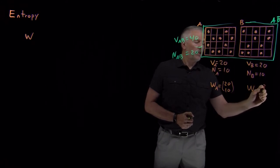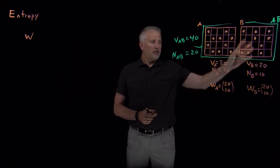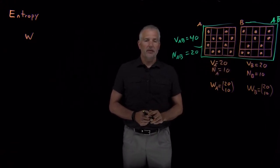For System B, I could also have chosen 20 choose 10 different microstates consistent with this macrostate of the system. So they both have the same multiplicity as each other.